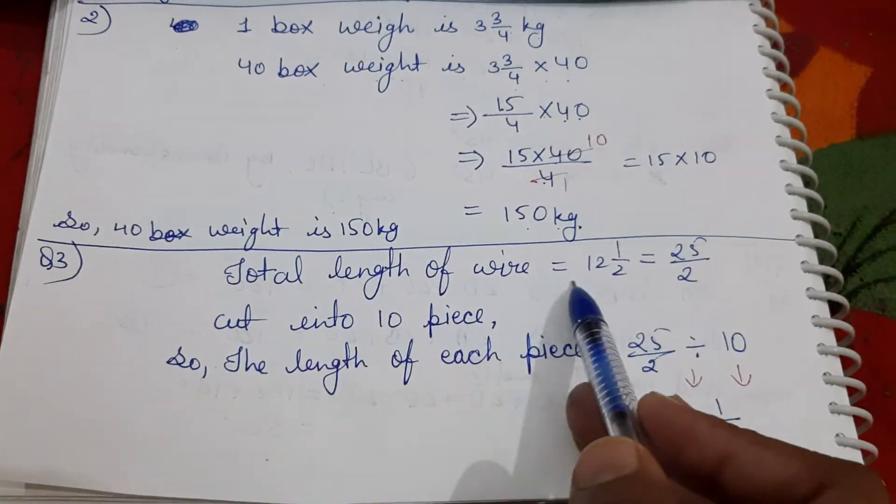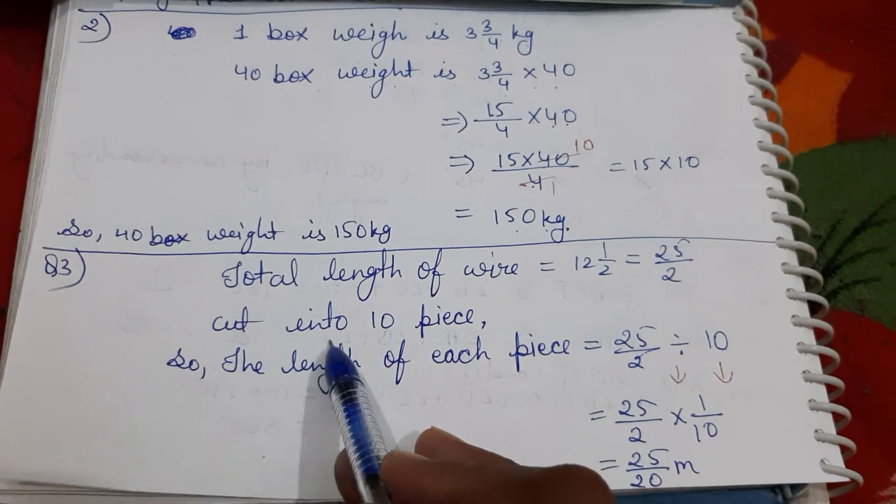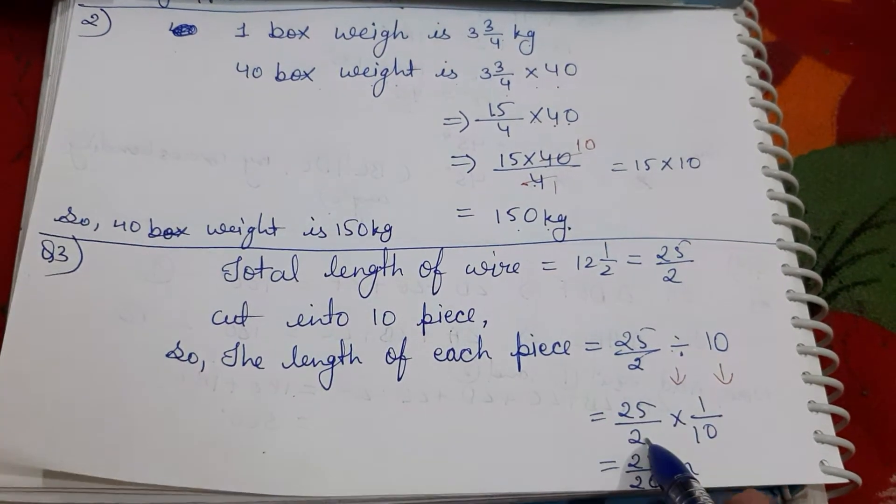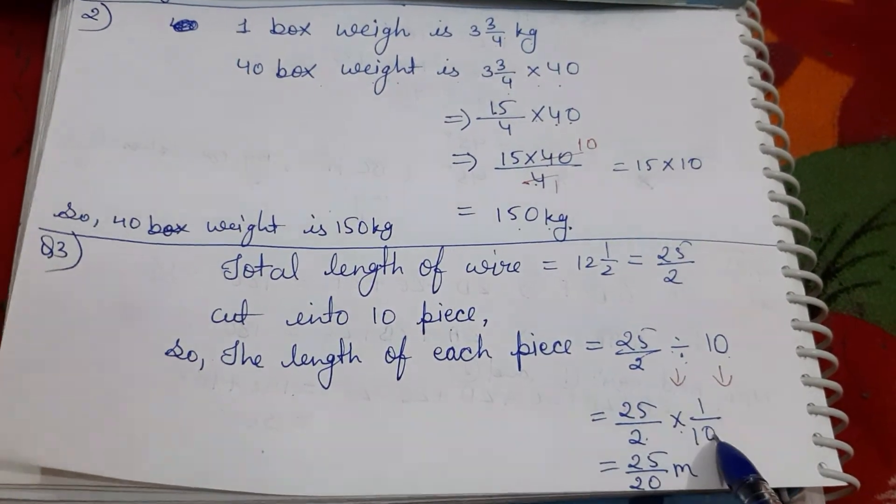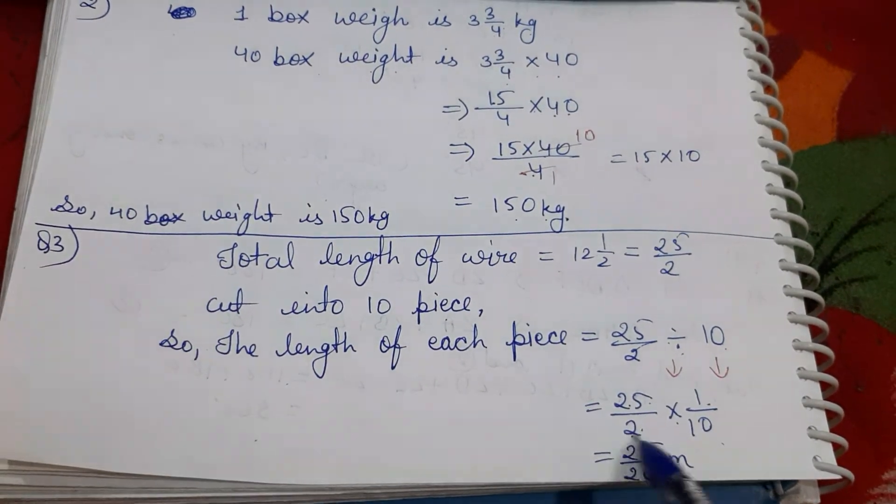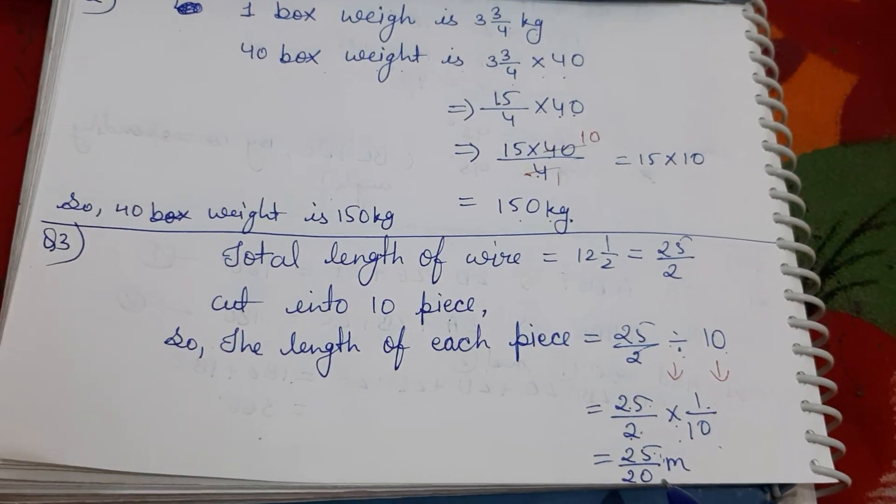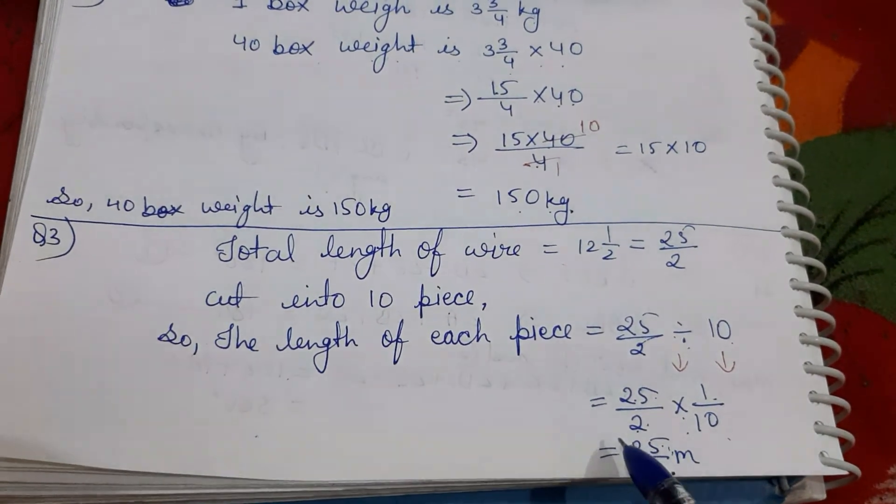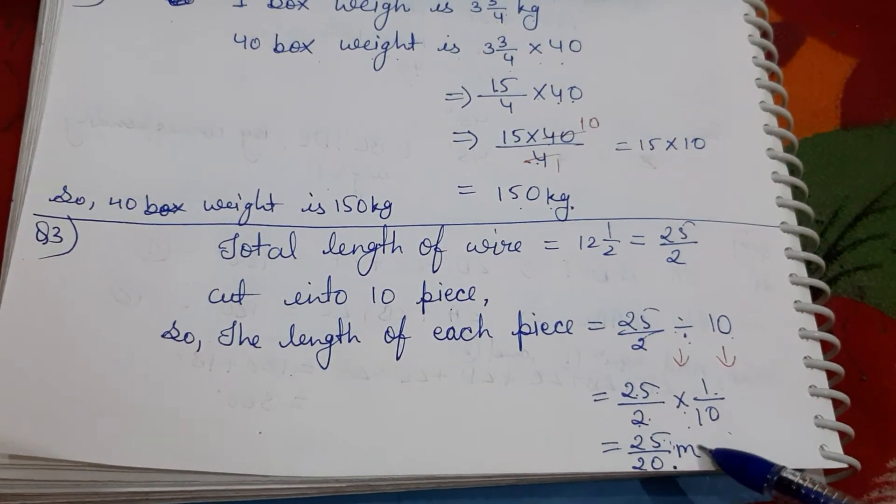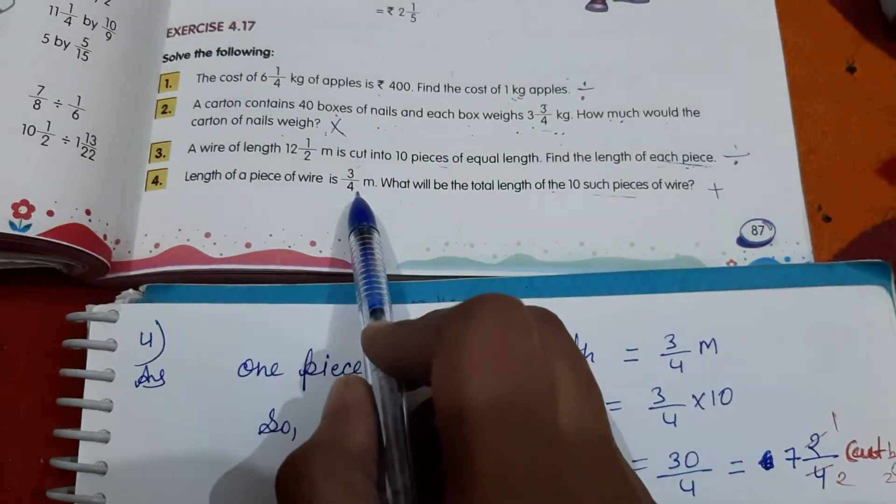So the total length of wire is 12 1 by 2, it means 25 upon 2. Cut into 10 pieces, so divide with this 10. 25 upon 2 as it is, multiply sign ho gaya, aur iska 1 upon 10 ho gaya. So 1 will be multiplied with 25 and 10 will be multiplied with 2. So answer is 25 upon 20. So 1 piece, 1 piece length of wire, that is 25 upon 20 meter. Length of a piece of wire.